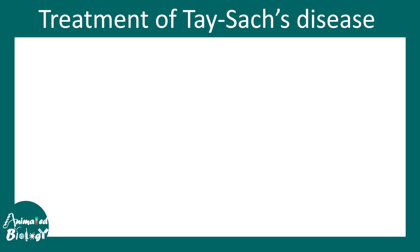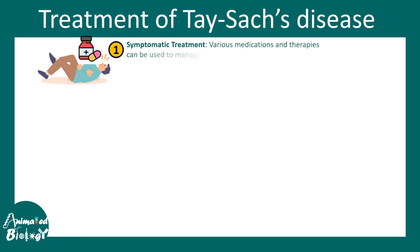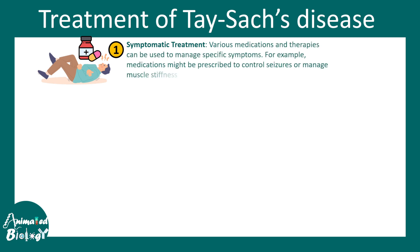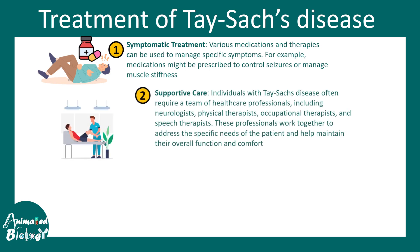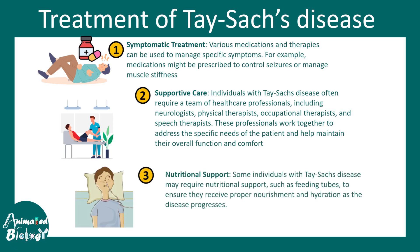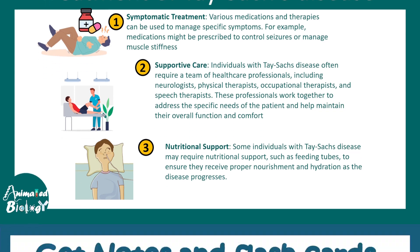When it comes to treatment, there is no cure for Tay-Sachs disease because it is a genetic disorder. Managing symptoms is crucial. For example, medications can address seizures or muscle stiffness, there is supportive care from physiotherapists and healthcare professionals, and there could also be nutritional support — sometimes Tay-Sachs patients require a feeding tube.